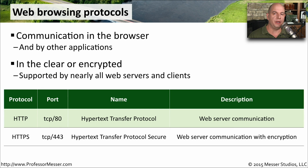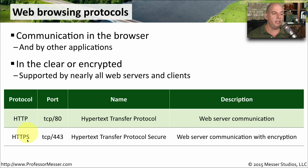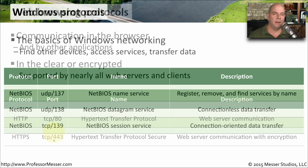Some of the most popular protocols on our networks are web browsing protocols. Information sent to a web server can either be in the clear (non-encrypted) or encrypted, and we use two different port numbers for these two different data streams. HTTP — Hypertext Transfer Protocol — uses TCP port 80 for in-the-clear, non-encrypted web server communication. If you need to send secure or encrypted information to the web server, you'll use HTTPS — Hypertext Transfer Protocol Secure — which uses TCP port 443 for the encrypted channel.